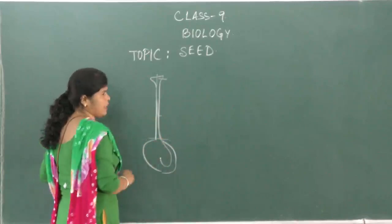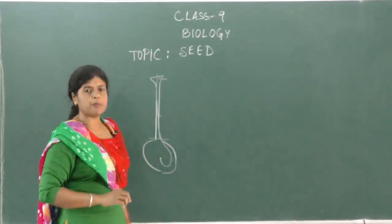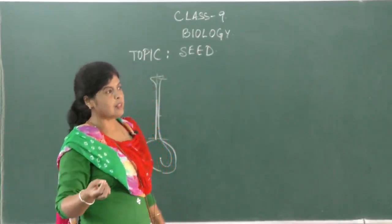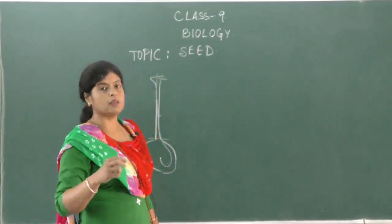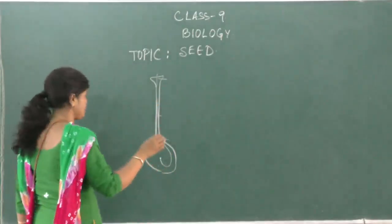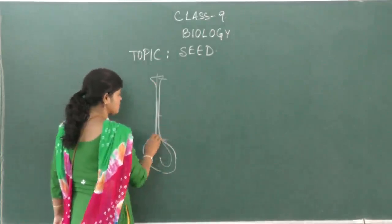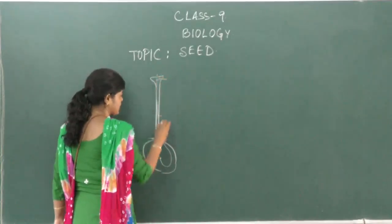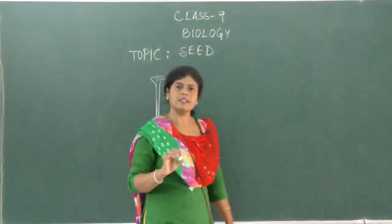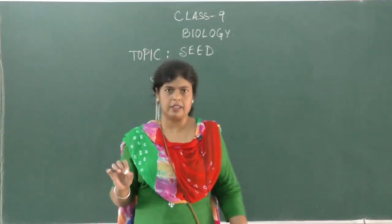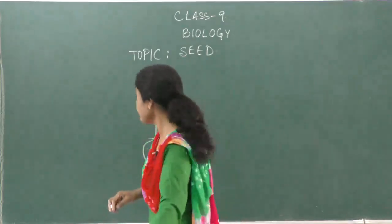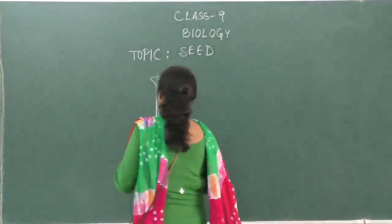One of the male nuclei fused with the egg cell and the other one fused with the polar nuclei. After this process is over, the stigma and the style wither off. The antipodal cells and the synergids also degenerate.